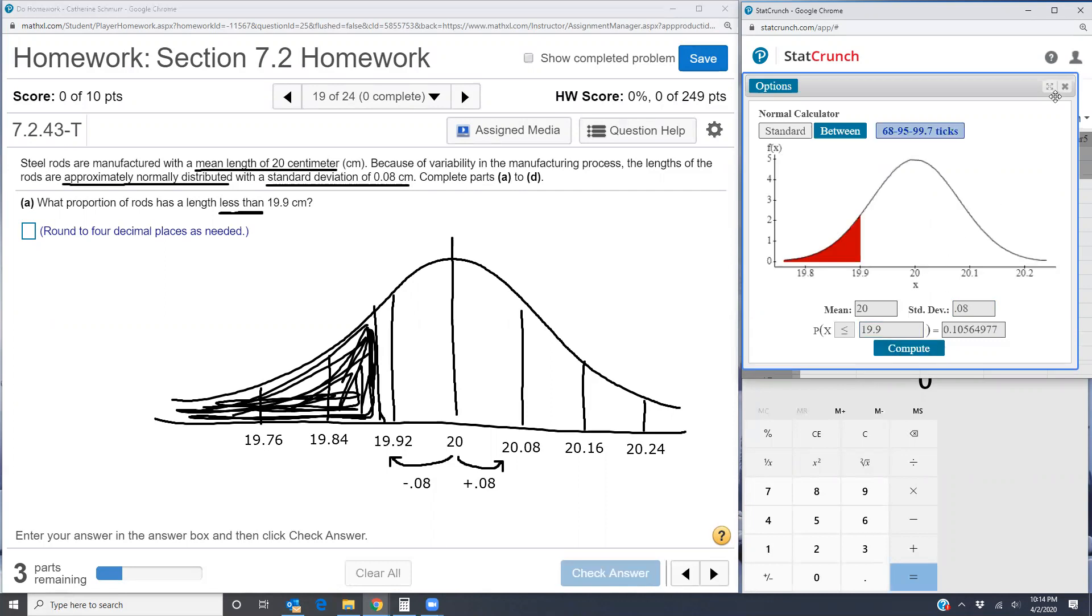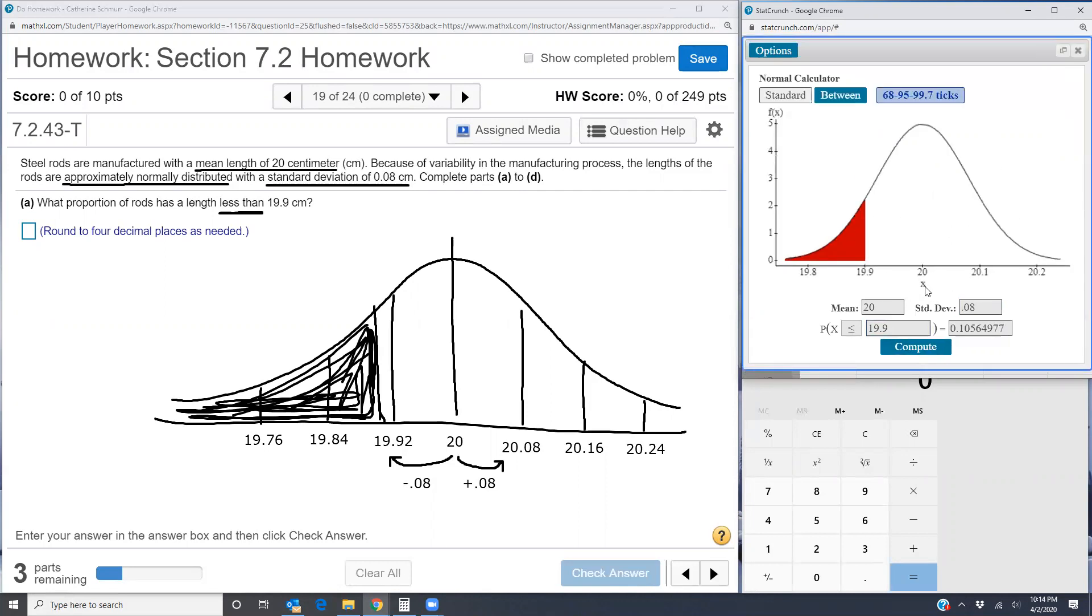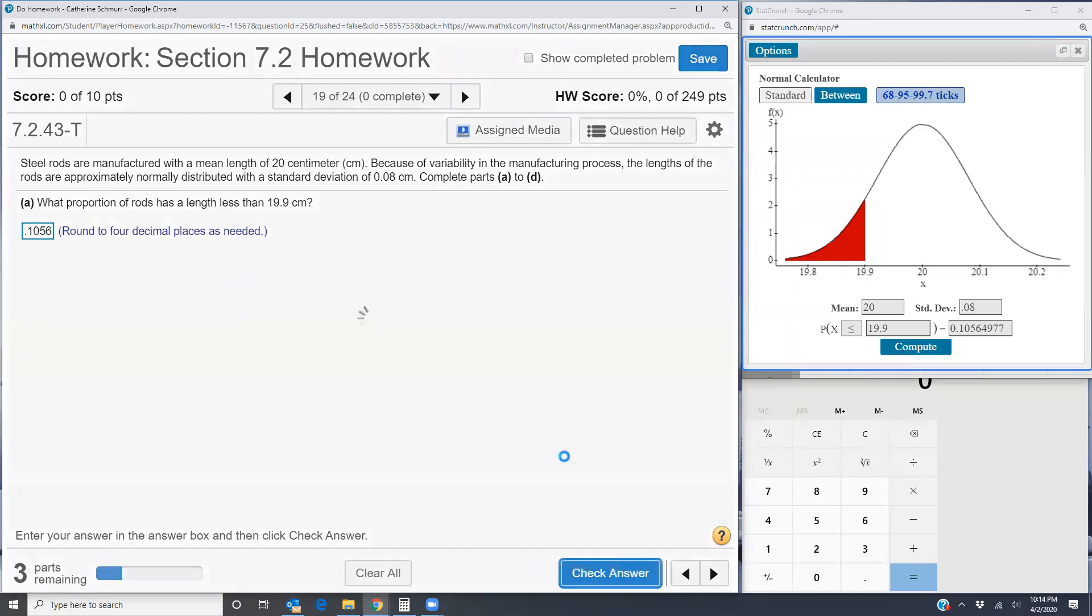Notice that their picture of the normal distribution matches what you've drawn on the screen. So we know we've got the right idea here. Our probability or proportion shows up in this answer box to the right of the equals sign, 0.1056. Check our answer. Perfect.